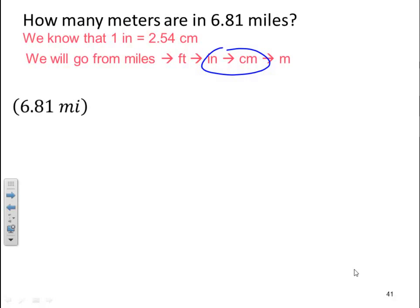So we start off with 6.81 miles. So now we go from miles to feet. So I got 5,280 feet for every one mile. And I need to put it in this fashion because I want miles to cancel. Next, I'm going to go feet to inches, which is 12 inches is equal to one foot. And I'm going to have my foot in the denominator to get that to cancel.